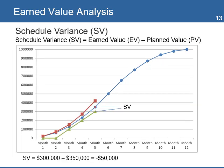Next, you calculate the schedule variance to see if the project is late or not. The value of the schedule variance is minus $50,000 — it's the difference between EV and PV. A negative number means that the project is behind schedule; the project has spent more time than planned to deliver the three health centers.